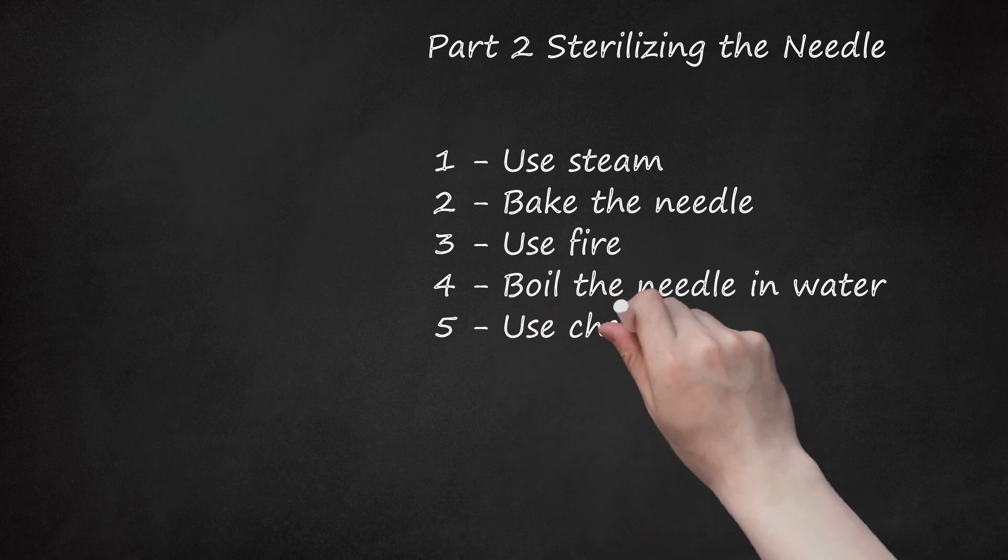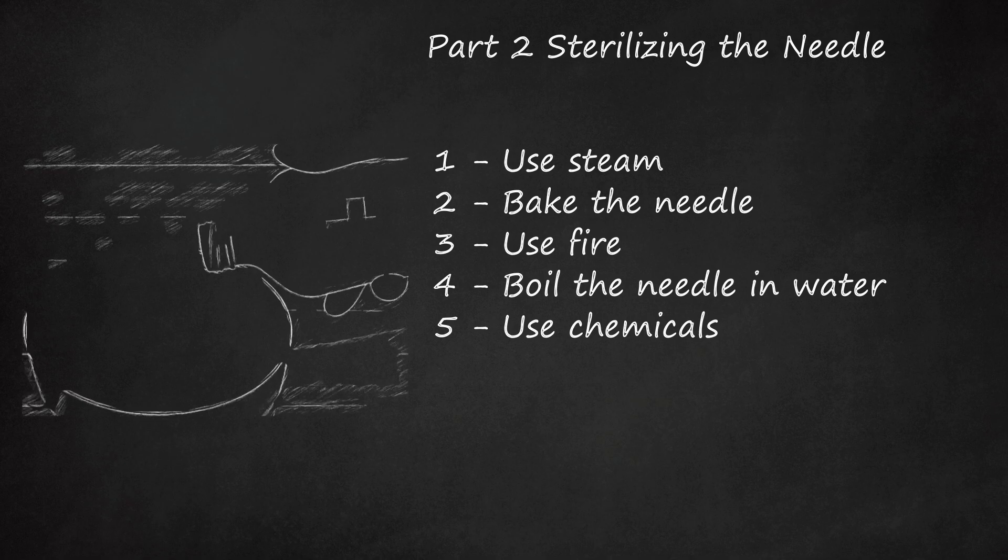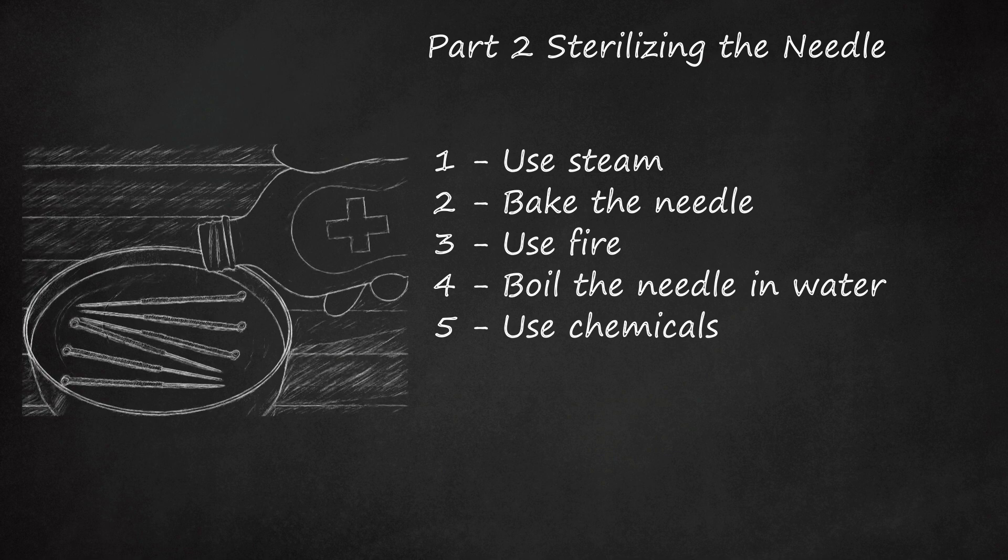Step 5: Use chemicals. You can sterilize a needle by using chemicals. Soak in the mixture for at least 20 minutes, unless it's drinking alcohol. If you use drinking alcohol, soak it in that solution for an entire day. You can rinse the needle in the following chemicals: